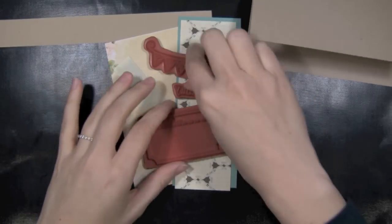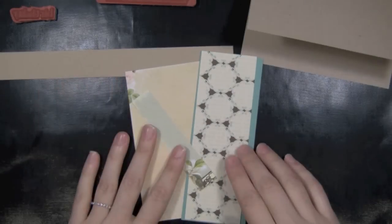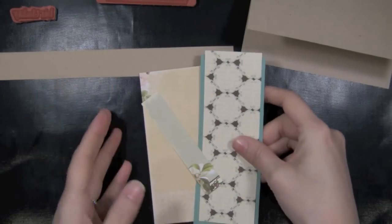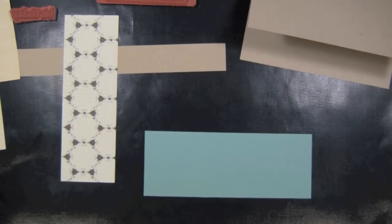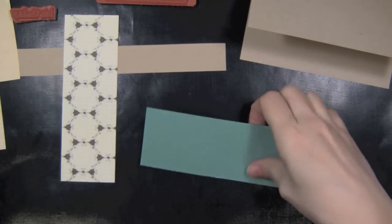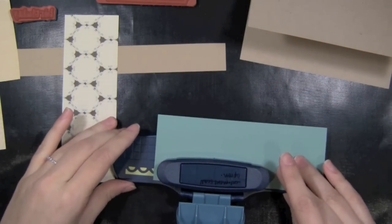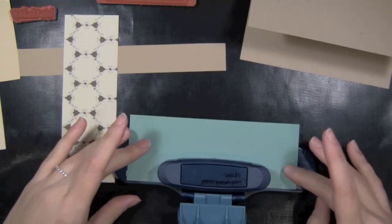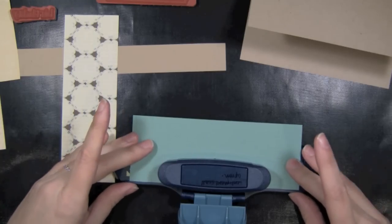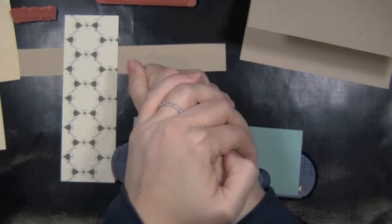I'm using some paper from Webster's Pages. It's a 6x6 pad. And so I'm using some pieces from there. I just have a strip of cardstock in this pretty little teal. And I'm going to grab my apron border punch by Fiskars. And just go ahead and get that punched out on both sides.